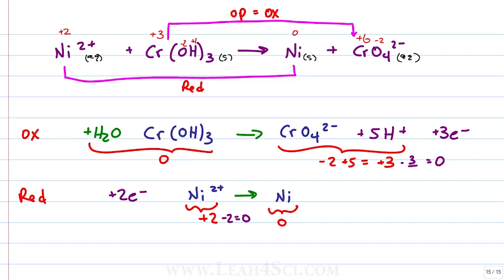Our electrons are balanced, now we want to make sure that we have the same number of electrons in the oxidation and reduction half reactions so they can cancel out. We have 3 electrons in oxidation, 2 electrons in reduction.